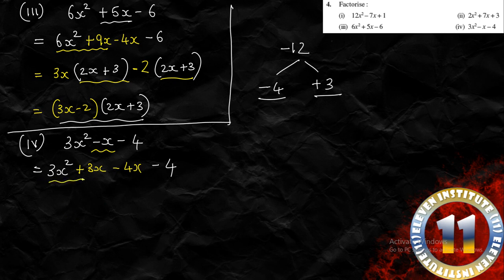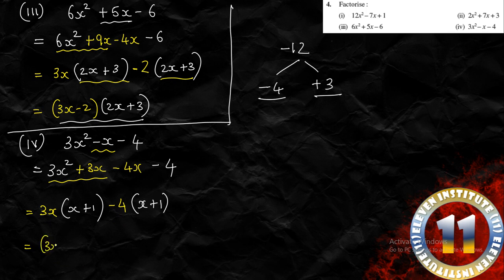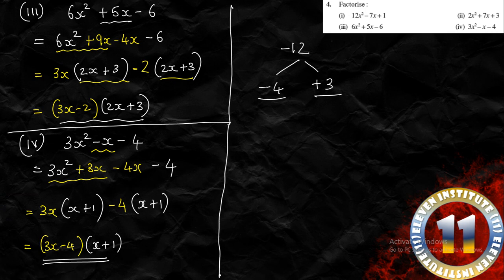Grouping: 3x² and 3x have 3x in common, giving 3x(x + 1). Then minus 4x and minus 4 have minus 4 in common, giving minus 4(x + 1). Since x + 1 is common, the factorization is (x + 1)(3x − 4). Please pause the video and write this down in your classwork.